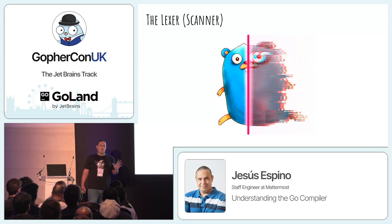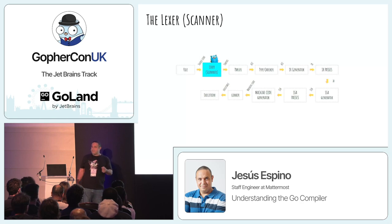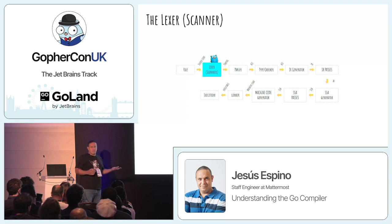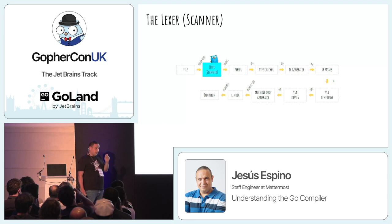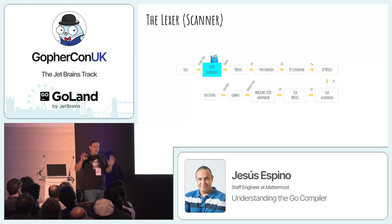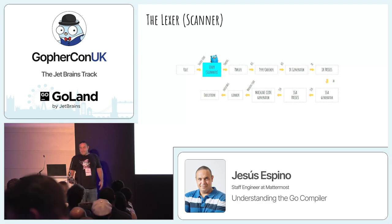Whenever you have source code, the first thing that happens is the lexer, or the scanner as it's called in the Go compiler code. What the lexer does is convert our source code into tokens. A token is a kind of word inside the language — a keyword is a token, an identifier is a token, a symbol like an open parenthesis is a token. It reads one character at a time and generates tokens on demand. Something else is asking for tokens, and the lexer starts reading characters until it finds one, returns it, and waits.